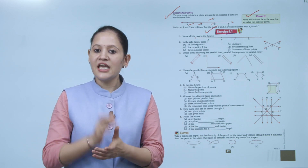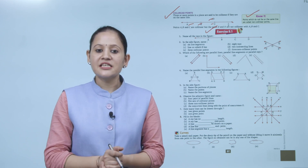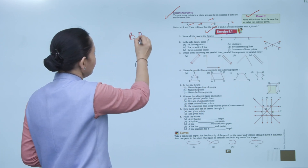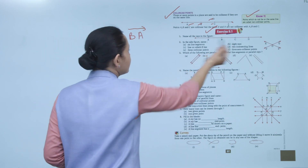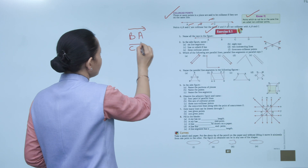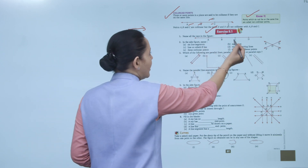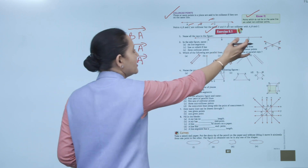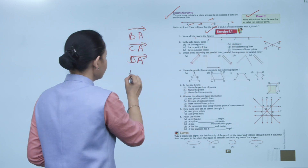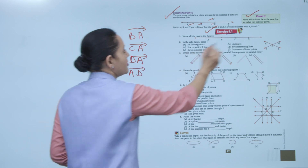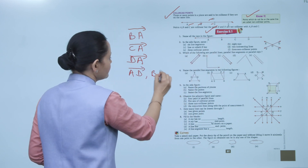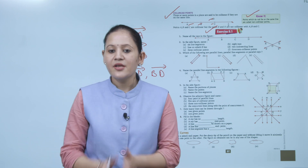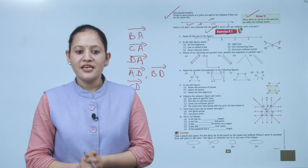Exercise 9.1: Name all the rays in the figure. As you know, a ray has one endpoint and can be extended in one direction endlessly. The rays are: BA, CA, DA, AD, BD, and CD. Practice all the questions of this exercise.